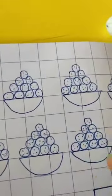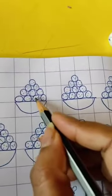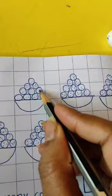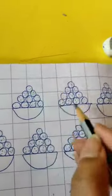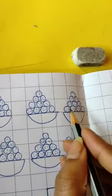Now we'll count how many cookies are there inside the basket. 1, 2, 3, 4, 5, 6, 7, 8, 9, 10, 11, 12, 13, 14, 15, 16, 17, 18, 19, 20, 21...